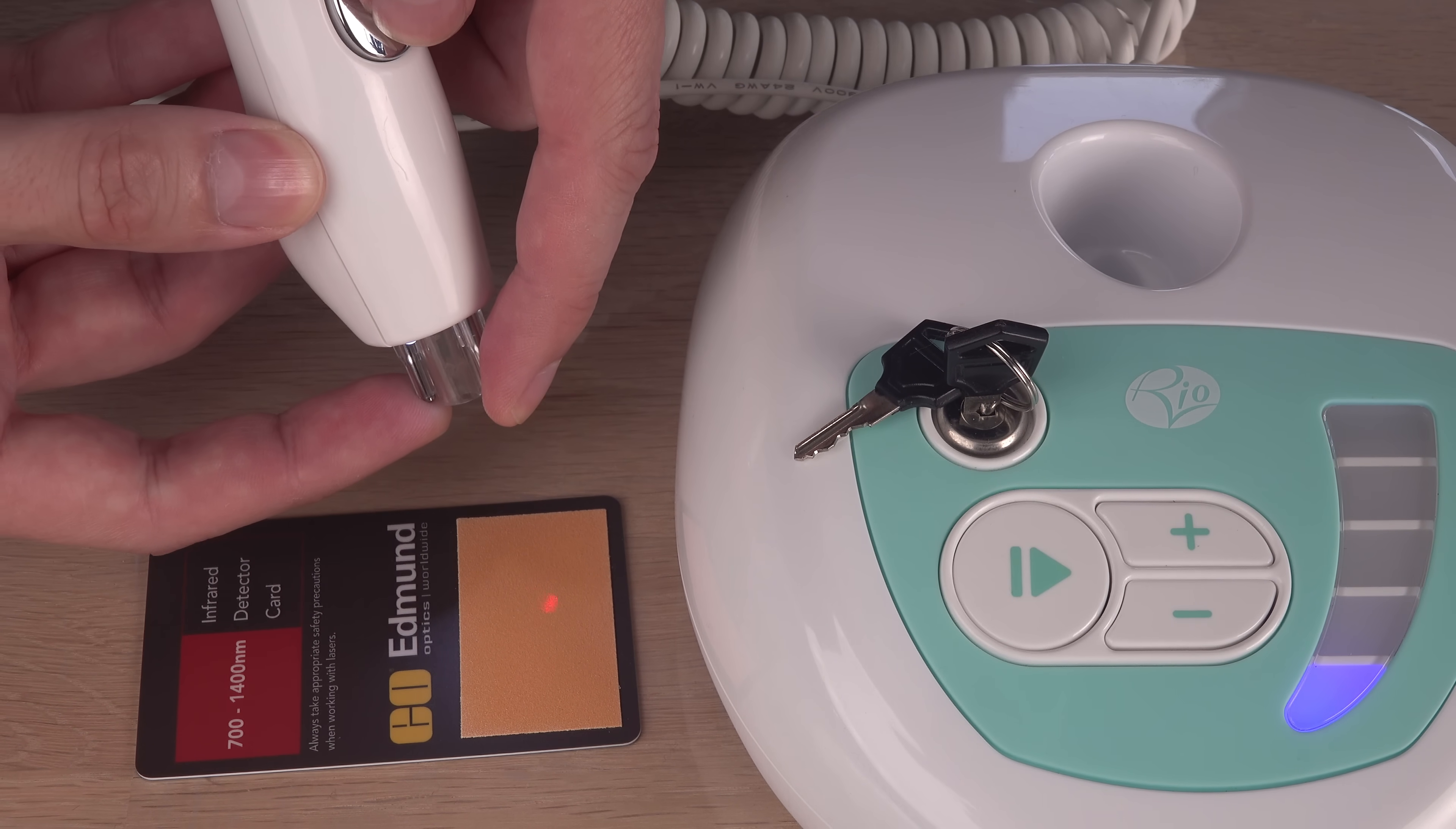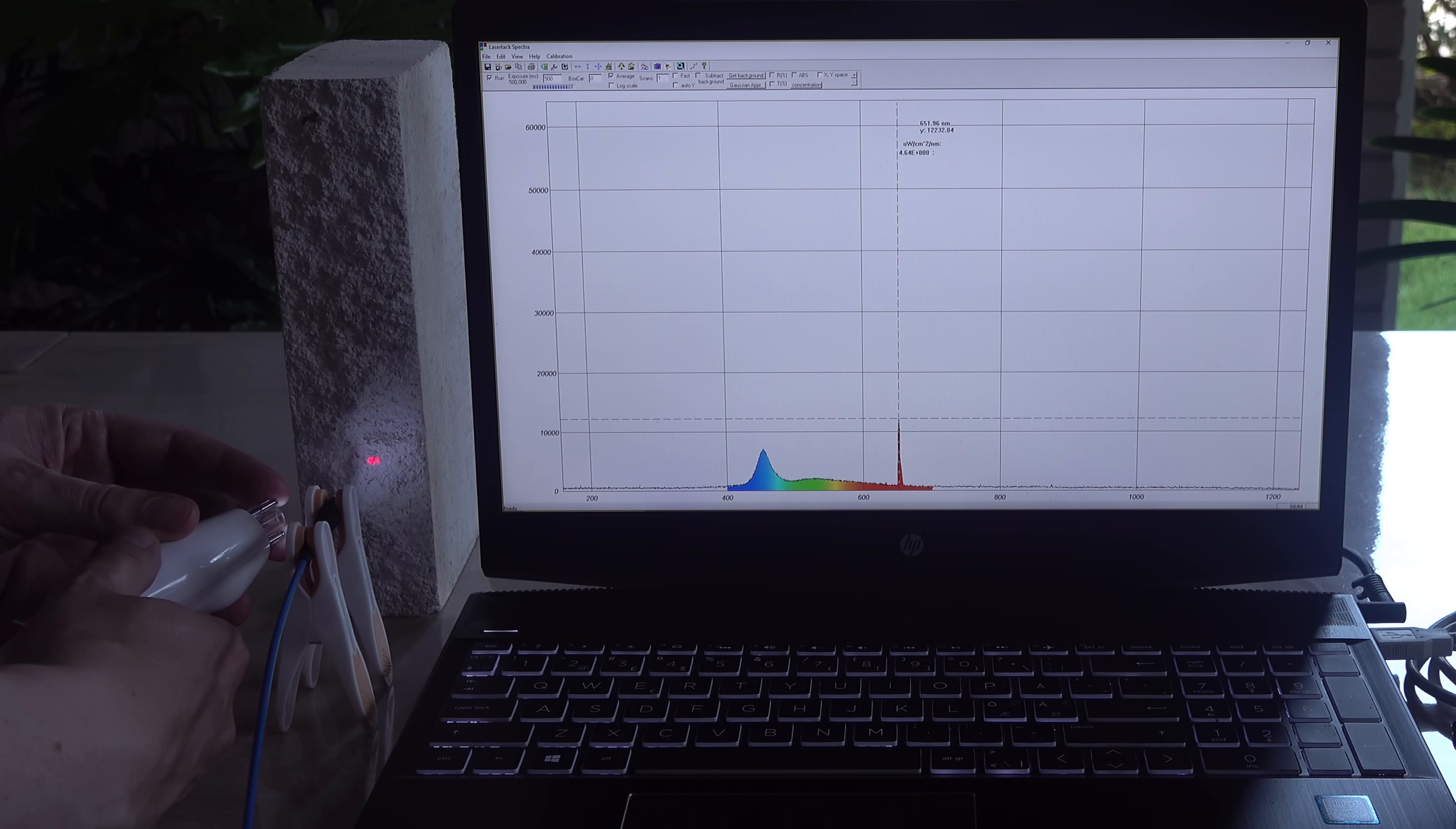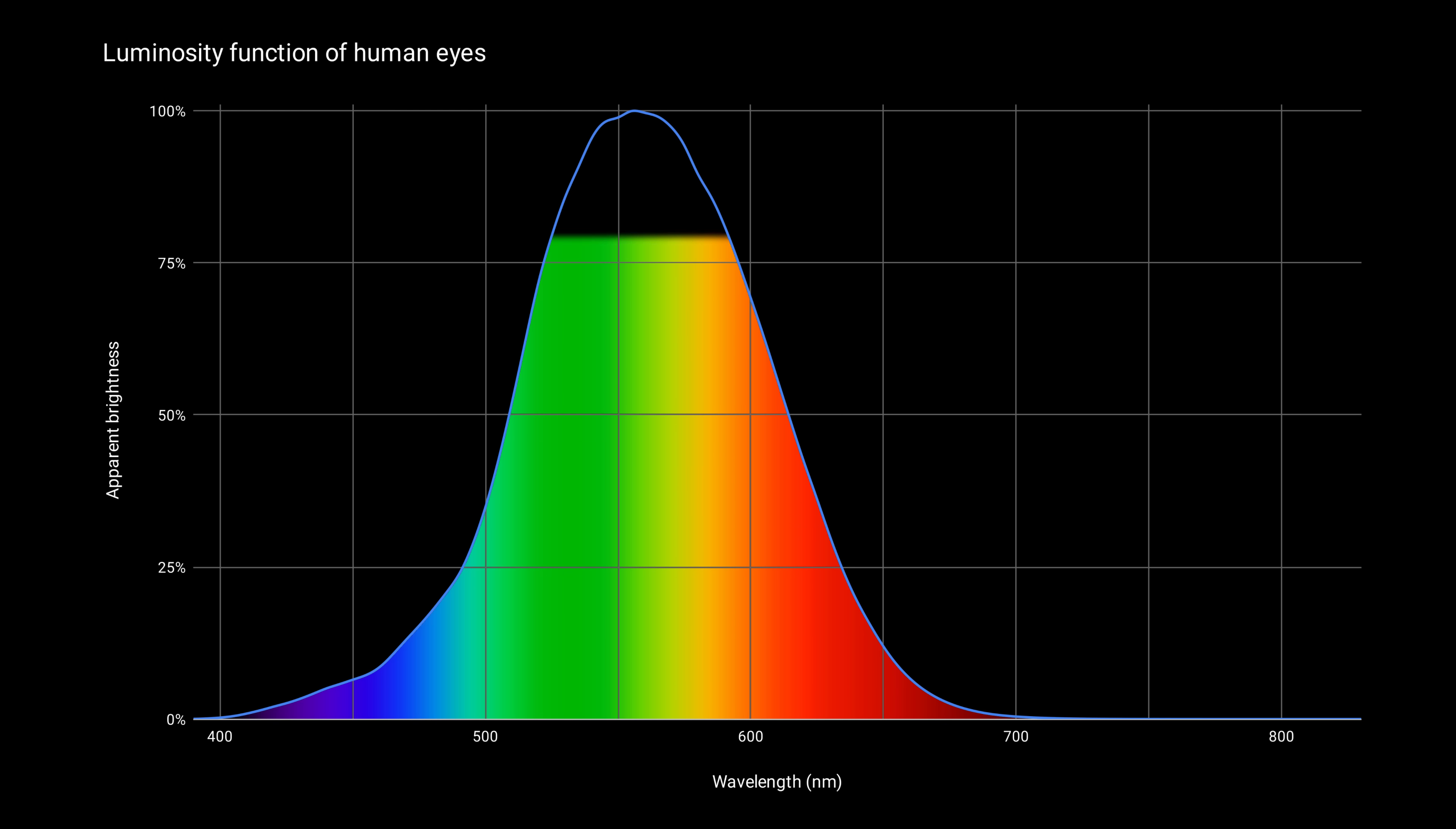With the button half-pressed, a red guide laser turns on. It is clearly a 650 nanometers type. Nice! More visible to our eyes at low power than the older, cheaper 660 to 670 nanometers types.